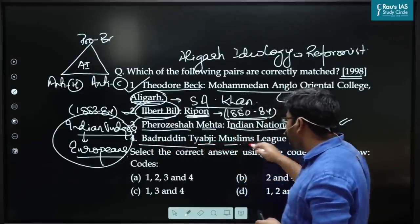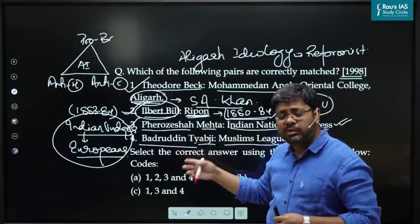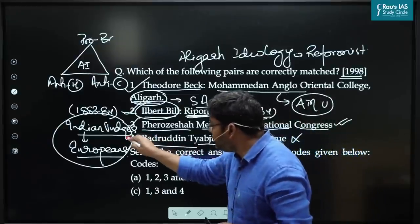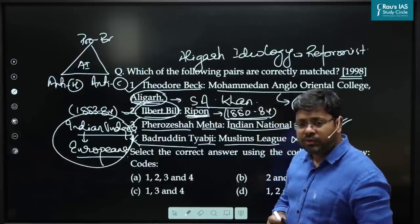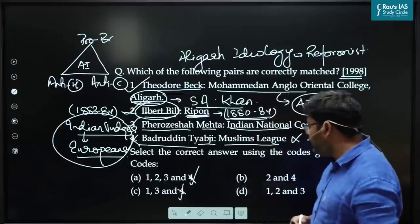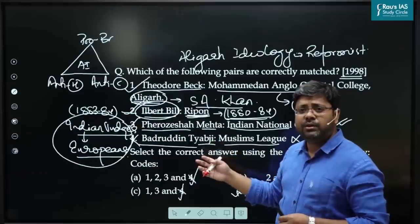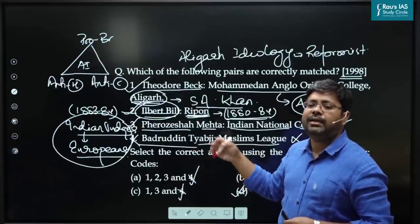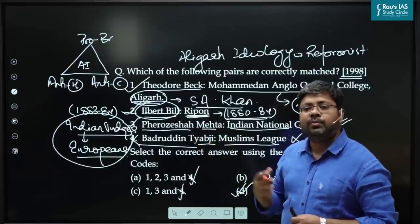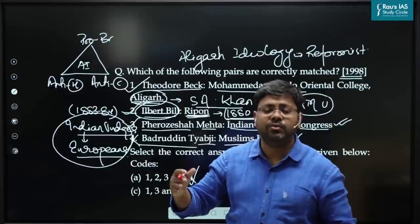The fourth match — Badruddin Tayyabji and Muslim League — is incorrect. We just discussed that Badruddin Tayyabji was the first Muslim president of Congress, not the Muslim League. So the fourth pair is absolutely incorrect. To solve this by elimination: eliminate option four from A, from C, and from B, and you will get your answer. We can solve the question from both direct and indirect methods. When we can solve through multiple methods, the probability of negative marking is negligible.